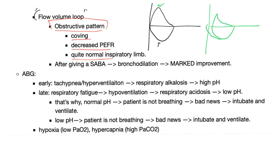If there is air trapping, the curve shifts because of increased residual volume and increased total lung capacity. This new curve alone won't tell you if the patient has COPD or asthma. To differentiate, you give bronchodilators. If there is a huge response — the peak increases and coving disappears — this is asthma. If there is little or no change, this is COPD, because asthma is reversible while COPD is fixed obstruction.